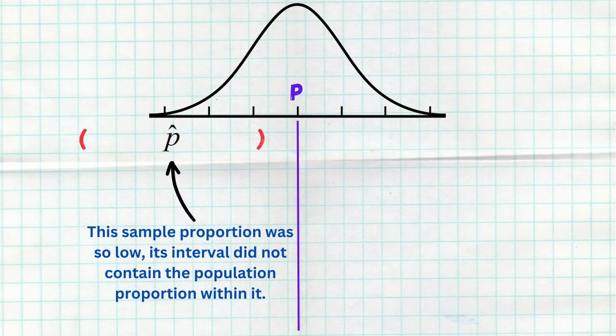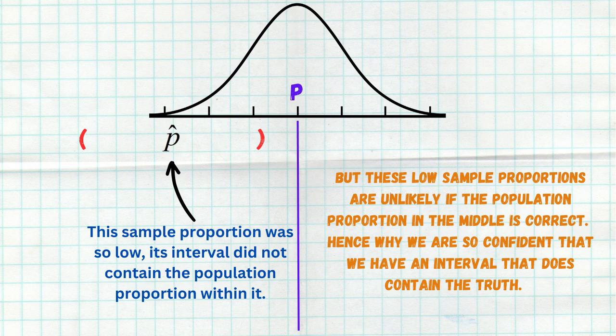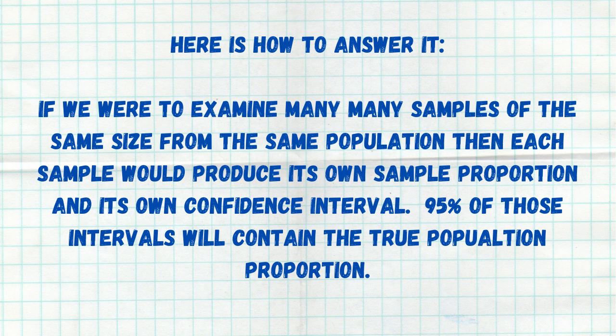Yes, there is a 5% chance that our interval does not contain the truth. If our interval doesn't contain the truth, that would mean we got a really, really unlikely sample — one of those bottom 2.5% or top 2.5% of samples so far from the true population proportion that once we built our interval, we somehow didn't capture the truth. But samples like those are very unlikely. What type of sample should happen is one right smack dab in the middle, and that's why when we build an interval around it, we'll contain the true population proportion. 95% of all possible intervals will contain the true population proportion.